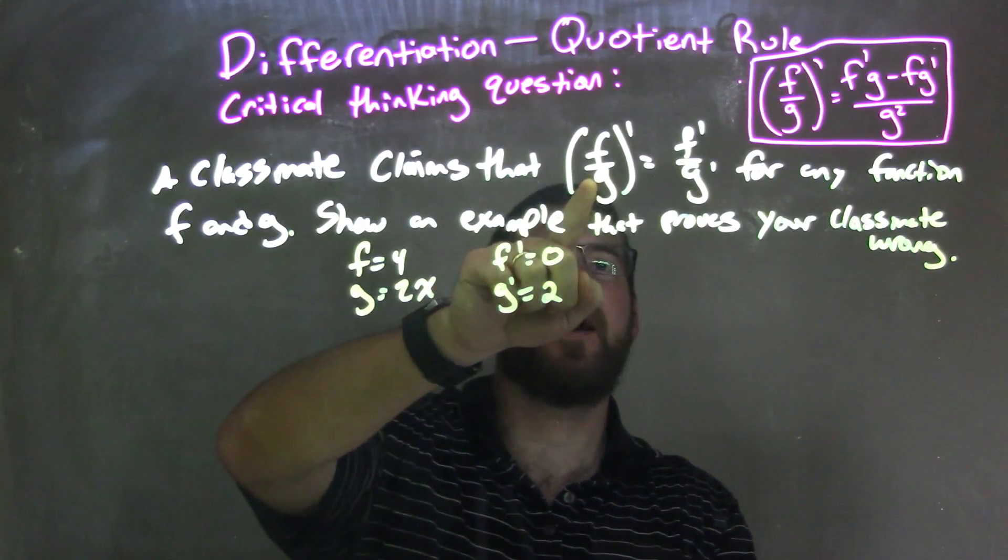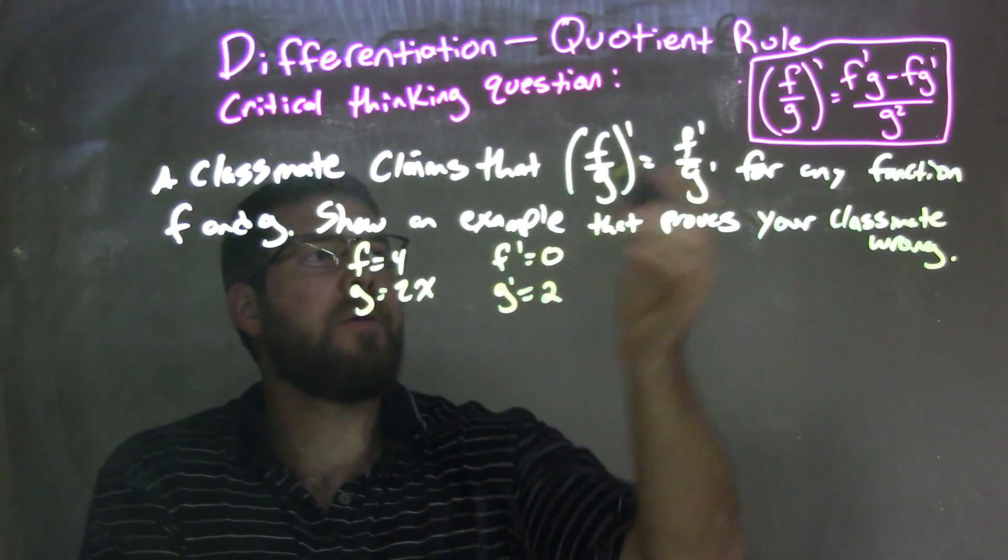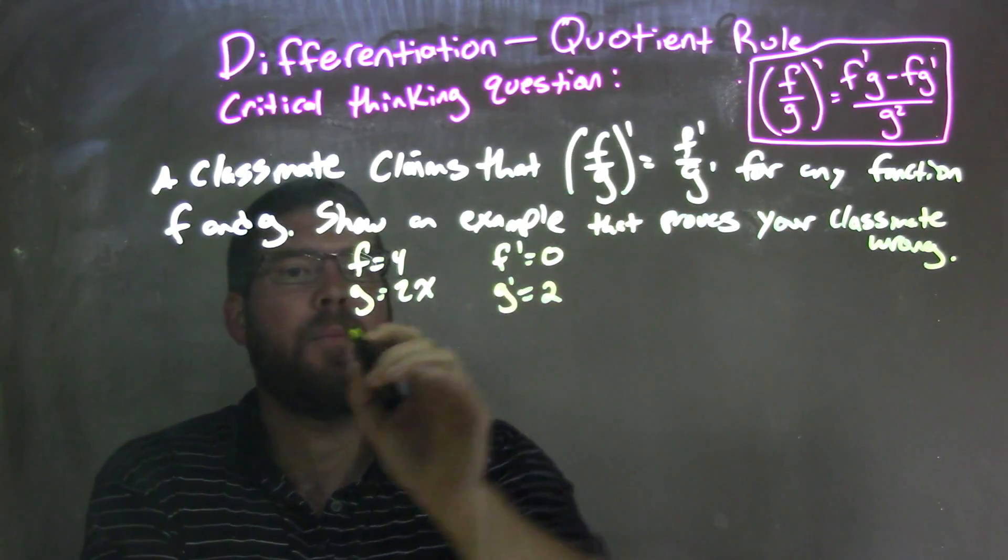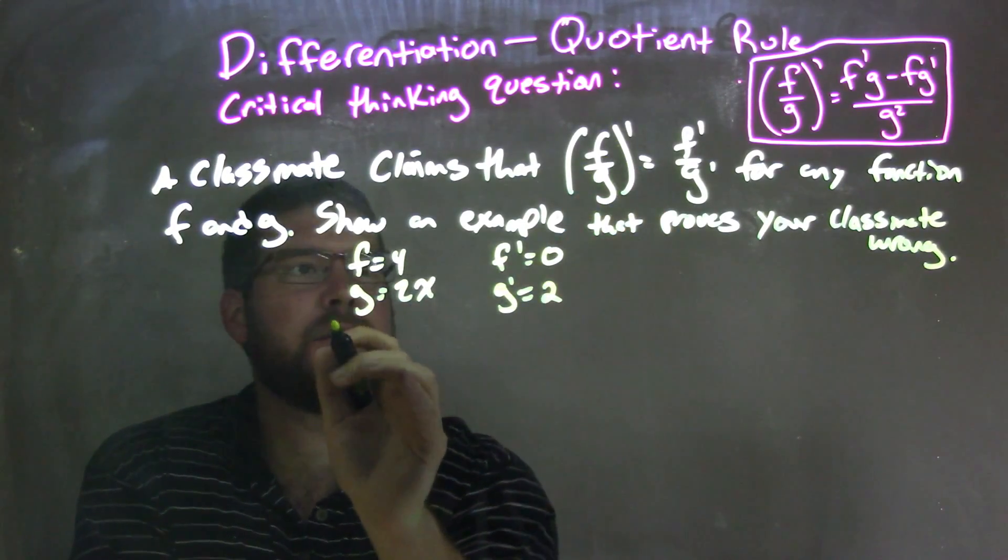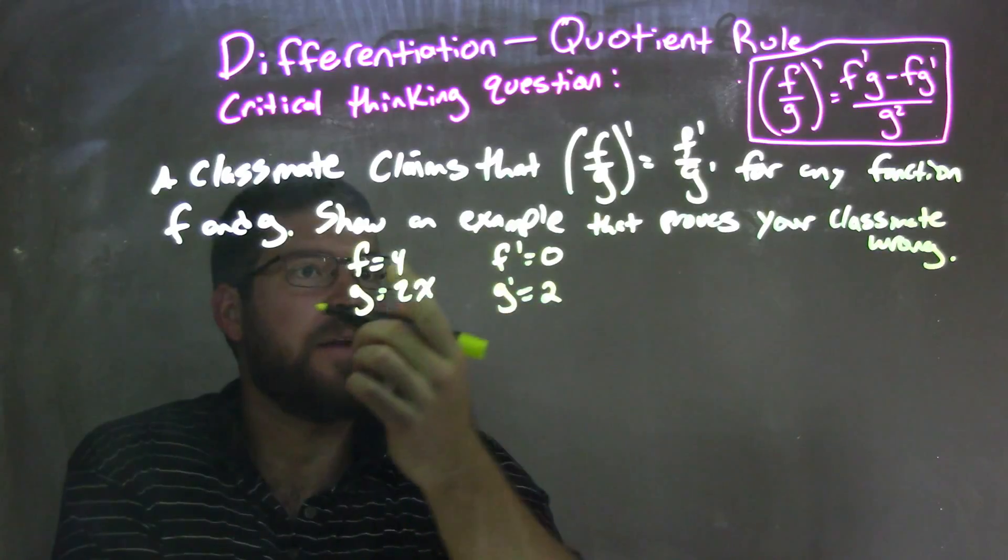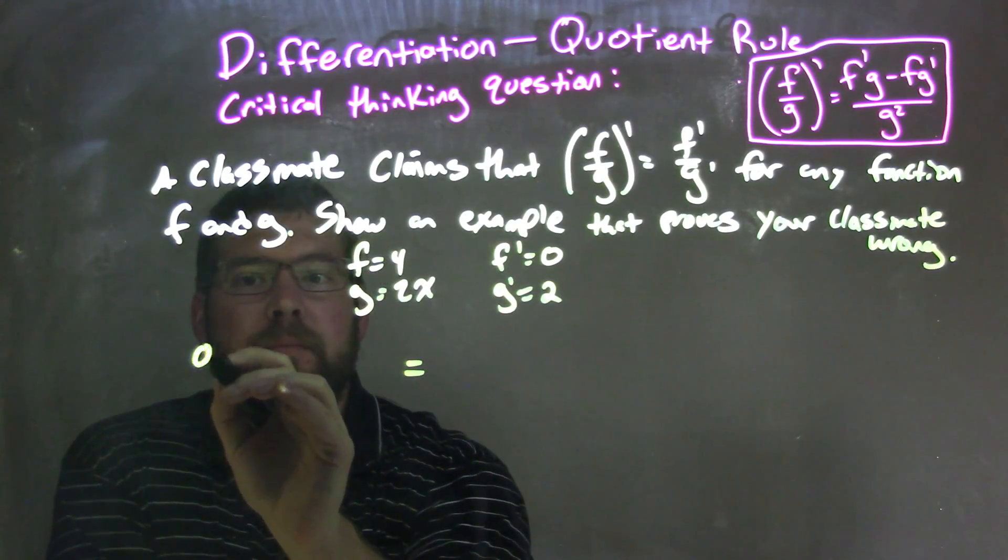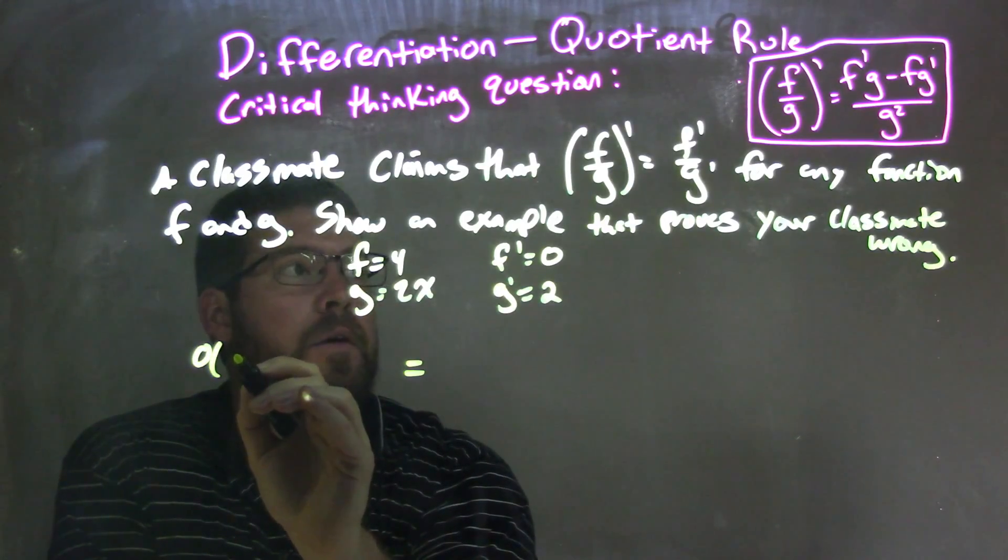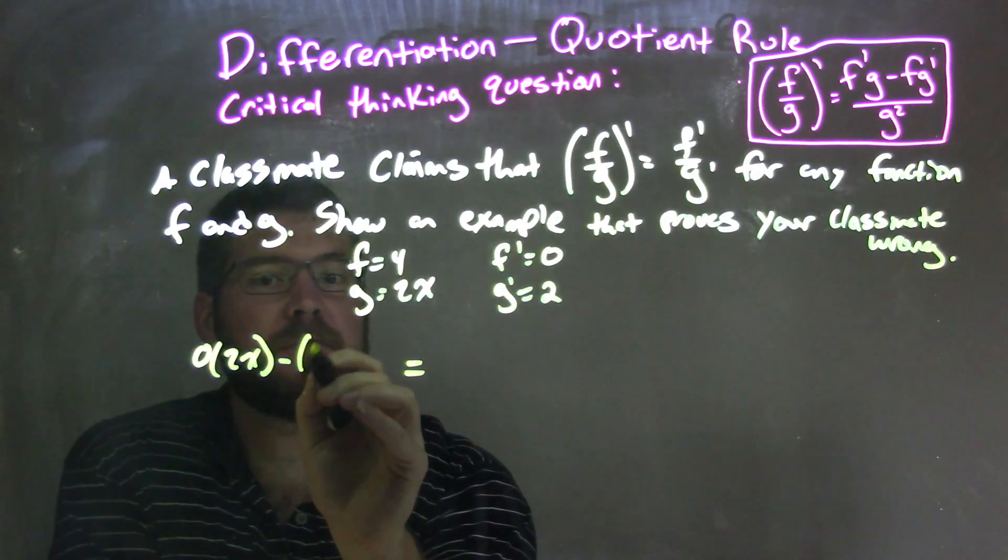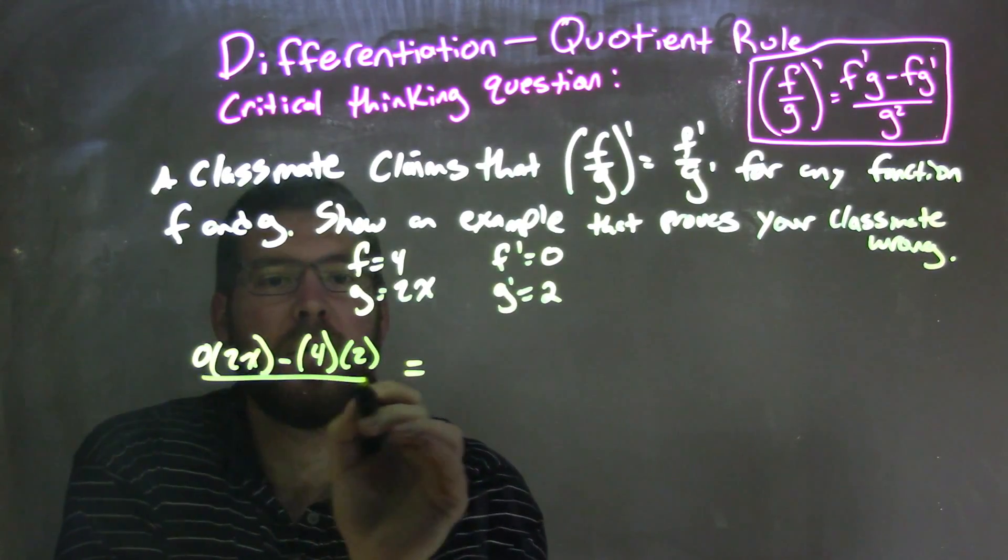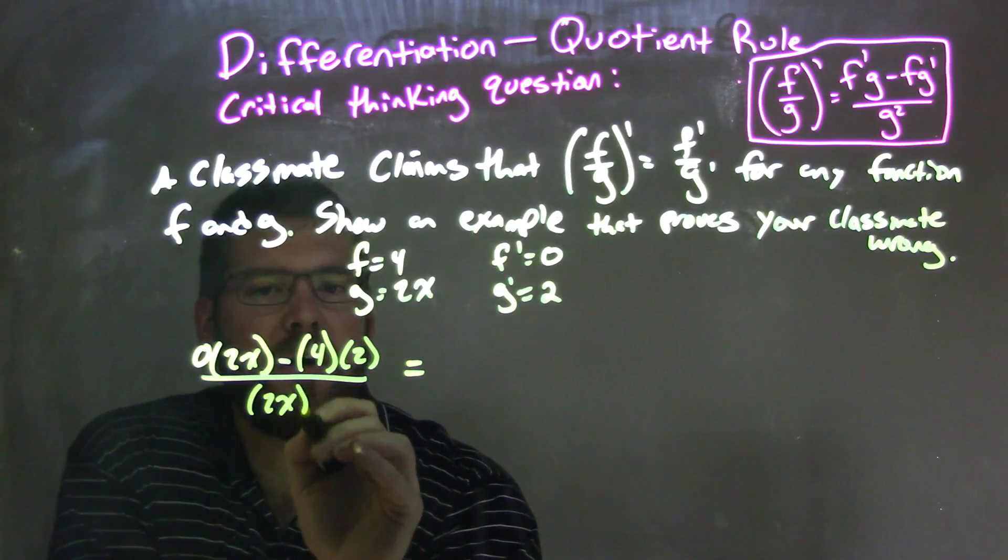So if I'm going to find f over g prime, that's like our quotient rule, that's a rule that we know. So I'm going to apply that. I'm going to take my f over g all prime, and that's going to be applying the quotient rule right down there. So I'm going to put that here first on the left, and that's going to be f prime, which is 0, times g, which is 2x, minus f, which is 4, times g prime, which is 2, all over g squared, which is 2x all squared.